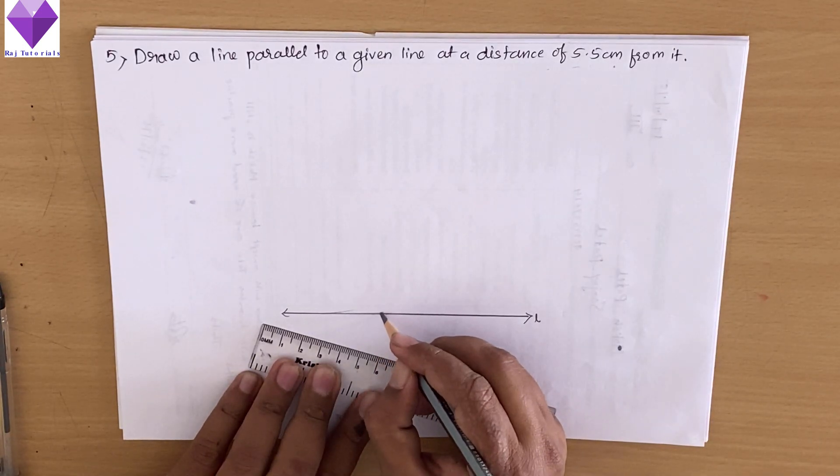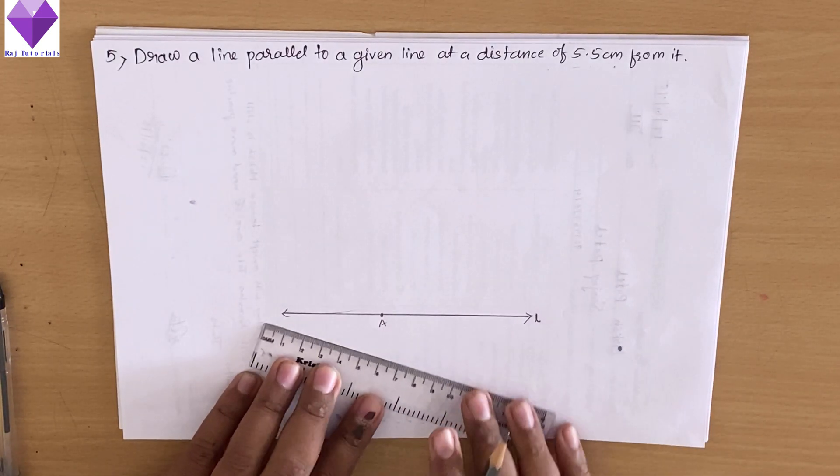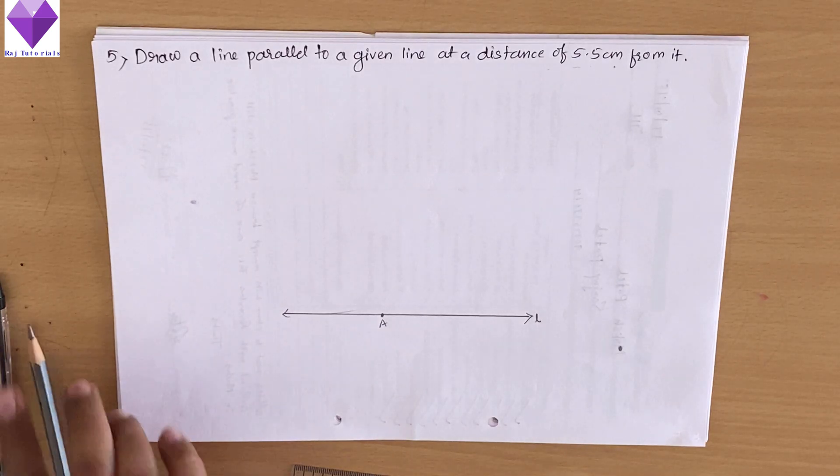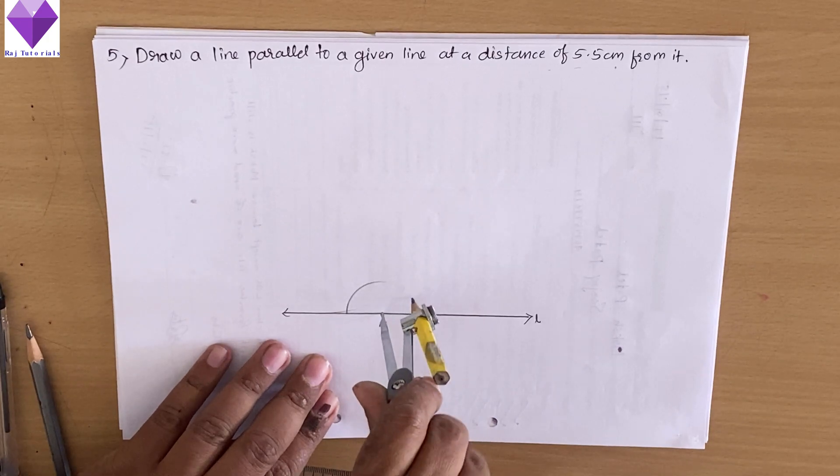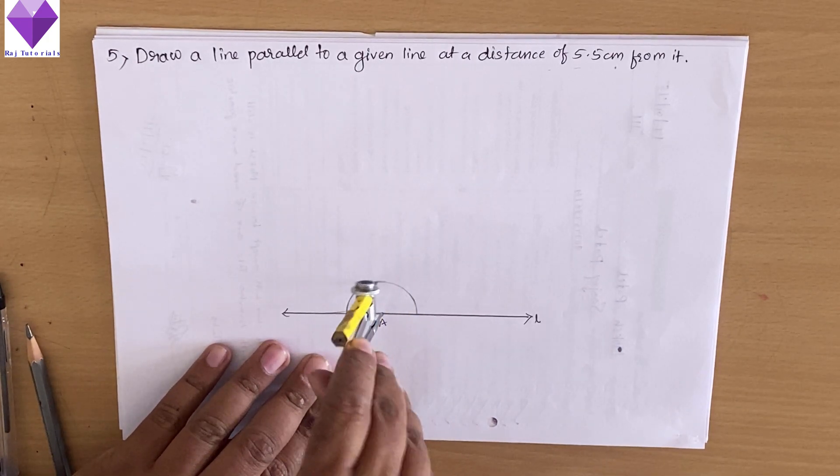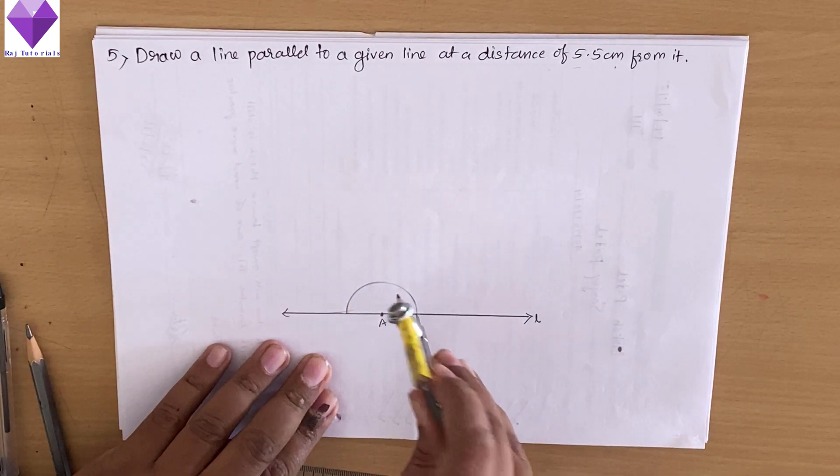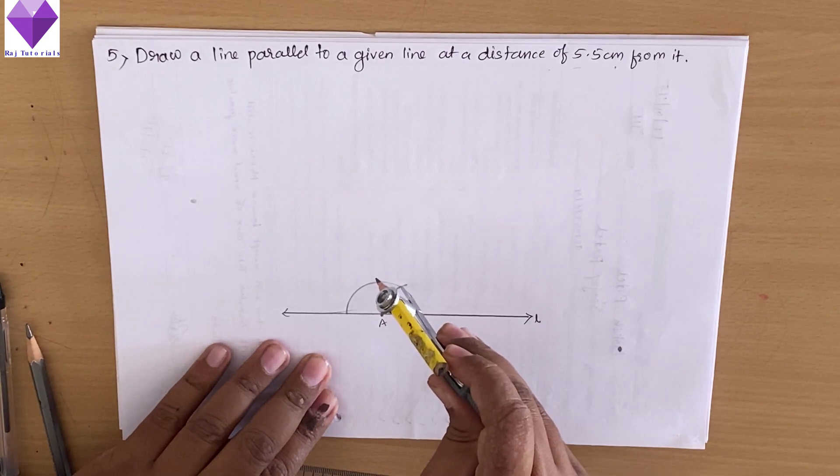Suppose I am taking any point A on this line where I will be drawing a perpendicular through A on line L. So I have drawn this arc, and with this I am cutting 60 and 120 degrees.